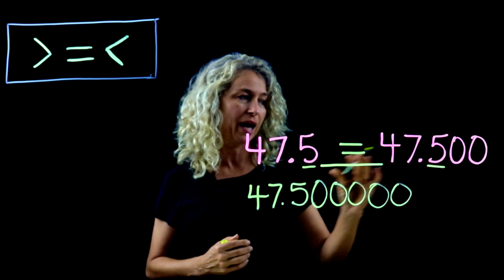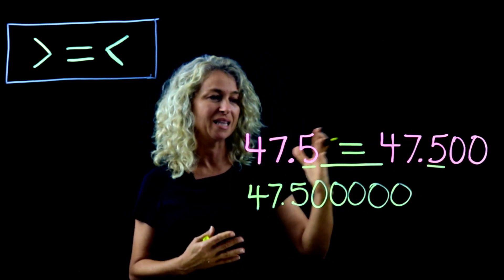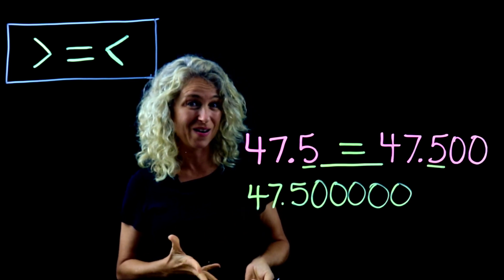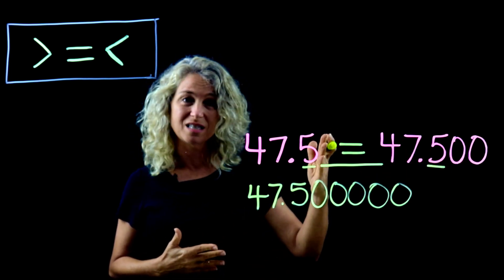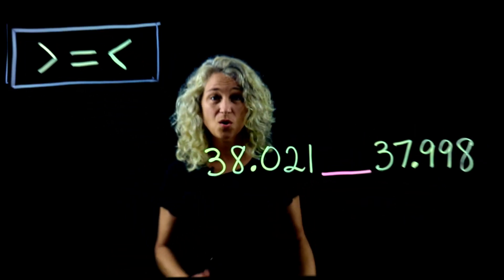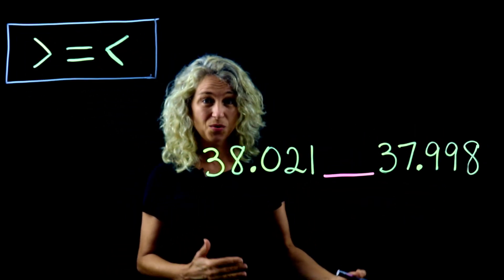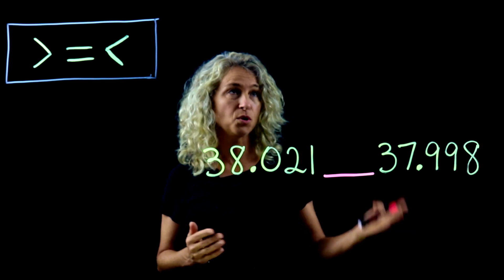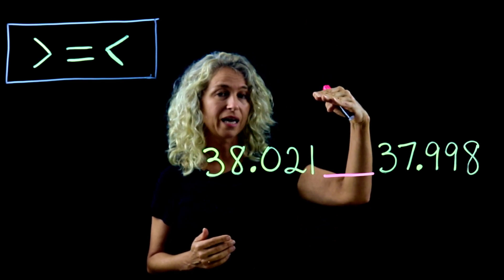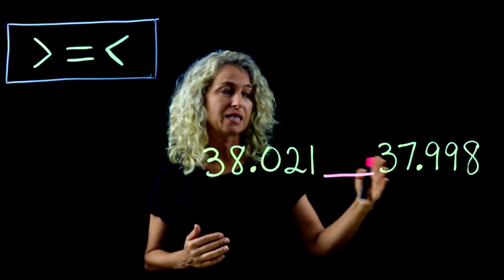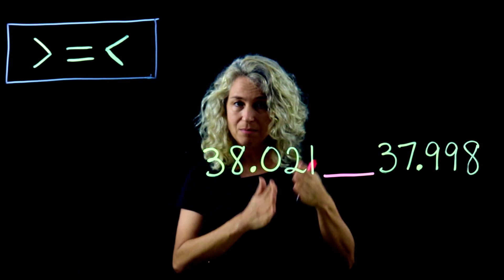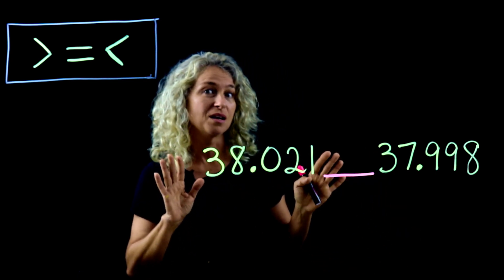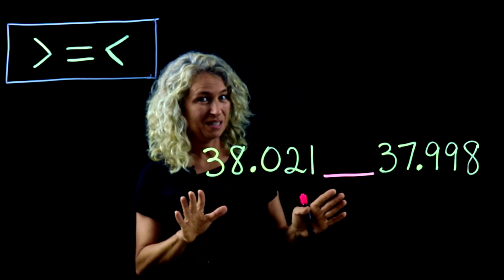They're still going to be equal, making sure that the last digit is the same. That is how we compare when you have zeros versus nothing. Remember, you can rewrite the numbers and stack the decimals to line them up, or you can compare the values directly.